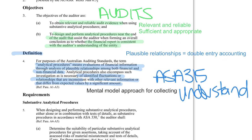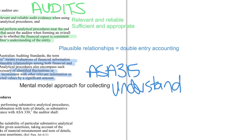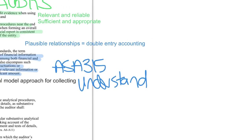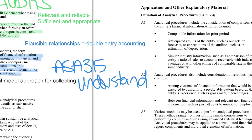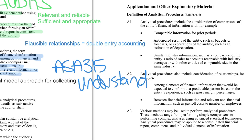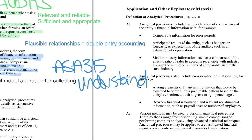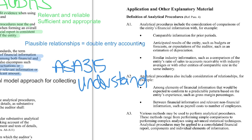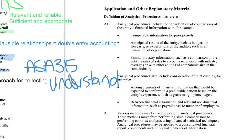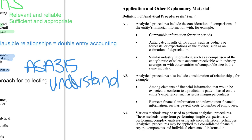Looking at the explanatory material, the definition involves comparisons of the entity's financial information with comparable information from prior periods, anticipated results like budgets, or similar industry information — sometimes called industry averages.